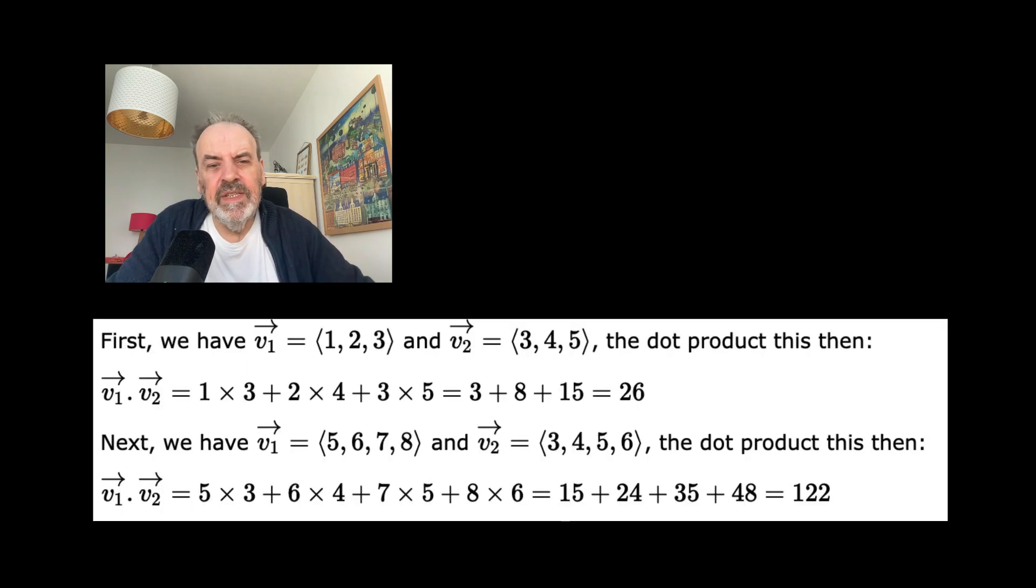So let's take some examples. A vector of (1, 2, 3), a three dimensional vector, and (3, 4, 5). We end up with a dot product which is 1×3 + 2×4 + 3×5. That equals 26.